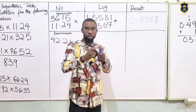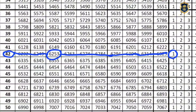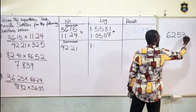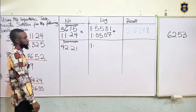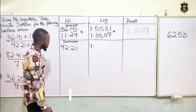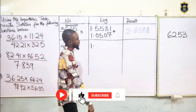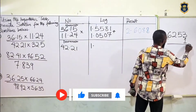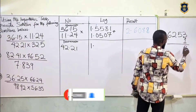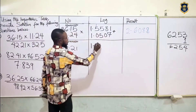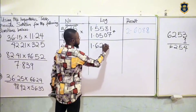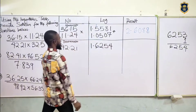Look at the screen — log 42 under 2 is 6253. The difference of 1 should be what? Check the log table — the difference of 1 is 1. So we put in 1 here: 1 plus 3 is 4, this is 5, this is 2, this is 6. So we come and put 6254.